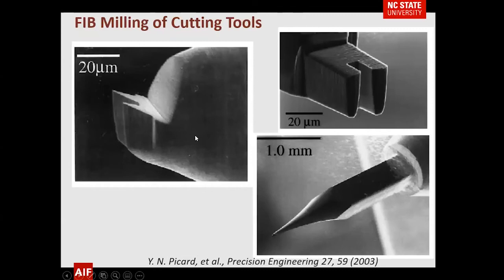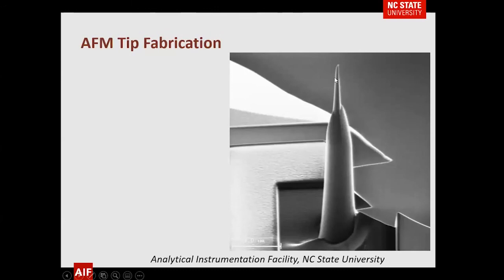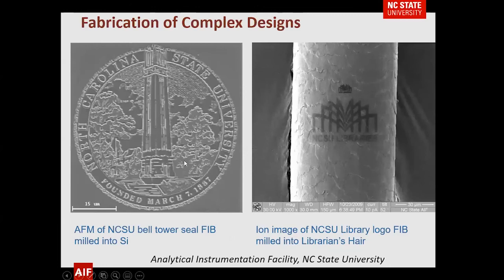A number of the early fabricated features were micro-tools for micro-machining on various materials. You can also make atomic force microscopy tips this way. Using bit-mapping, you can pattern any image — here's the North Carolina State seal at a 15-micrometer scale bar. We always like to show this hair donated from our head librarian, with the NC State Library logo imprinted in it. Groups at NC State are using FIB patterning for micro-machining of diamond to make diamond dies used to pattern material.